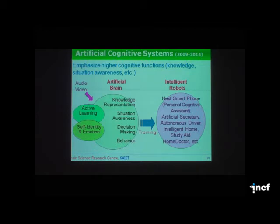We came up with a much better speech recognition system using all three different models. That's the first phase of the neuroinformatics research program. From last year I started a small research program called artificial cognitive system — based on the perception part, which saw some improvement — and now we try to move to higher cognitive function.